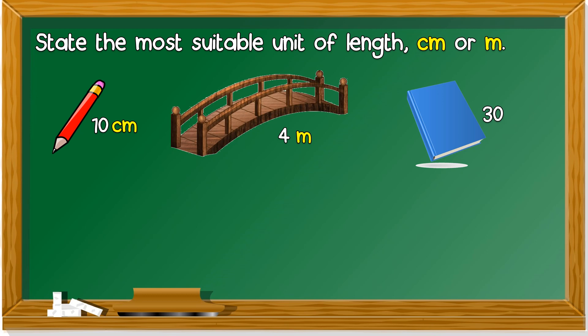This is a book. 30. 30 CM or 30 M? 30 CM. How about this? A blackboard. 10 what? 10 CM or 10 M? The most suitable length is M.